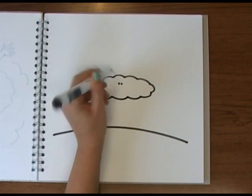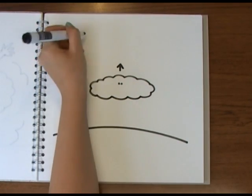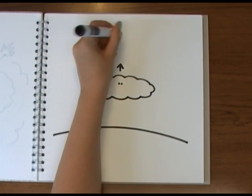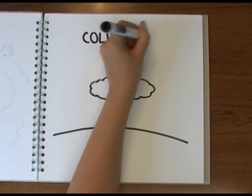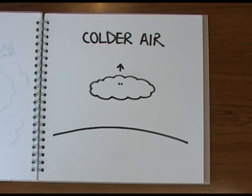If the air is hot enough, it will keep rising into colder and colder air, so that whilst the air in the cloud is cooling, it's still warmer than the air around it and it keeps floating up.